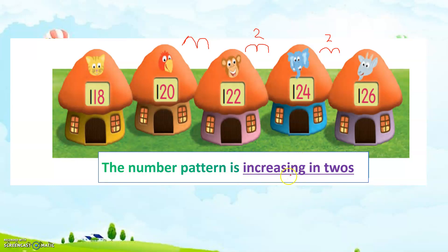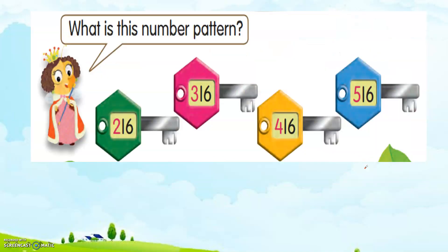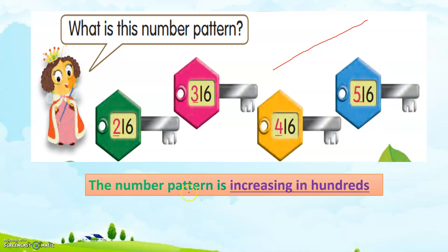So we should write here whether it is increasing or decreasing, and then the values. What is the number pattern? This one: 216, 316, 416, 516. The values are changing in hundreds. The series is ascending because it goes from the smaller to the larger number. The number pattern is increasing in hundreds. That means 216 plus 100 gives 316, add another 100 gives 416, and another 100 gives 516.